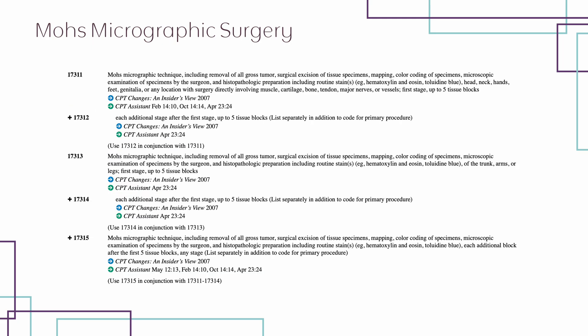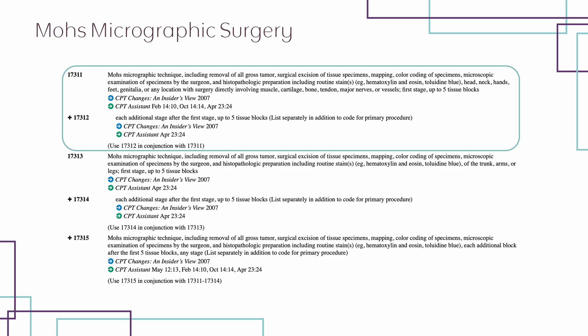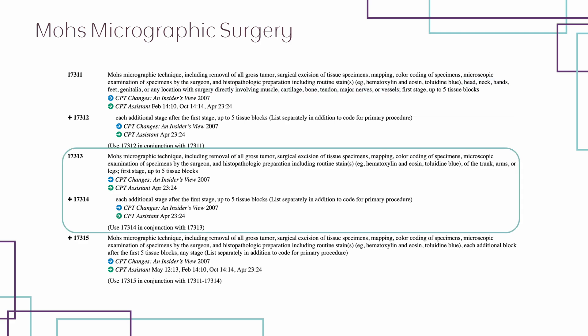When we get to the code set itself, there are a few things to notice. There are two code families. The first code family is for the head, neck, hands, feet, genitalia, and any location directly involving muscle, cartilage, bone, tendon, major nerves, or vessels. The second code family involves the trunk, arms, or legs.